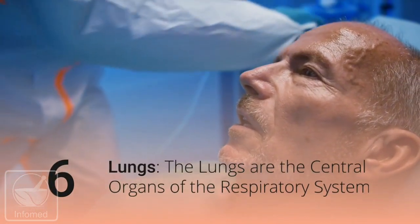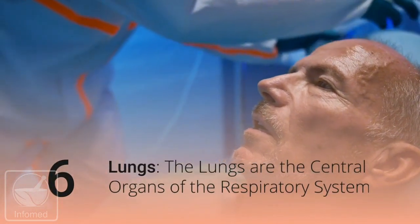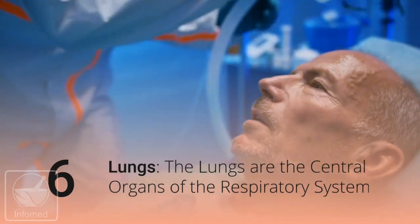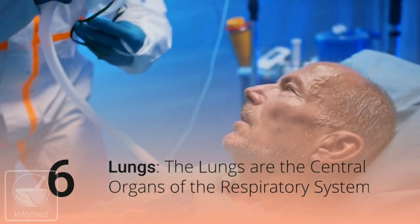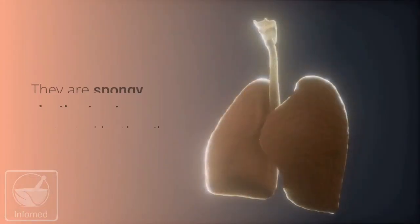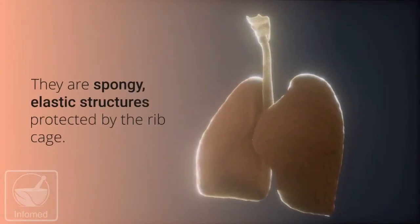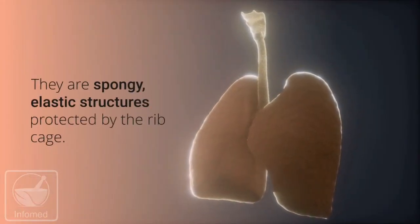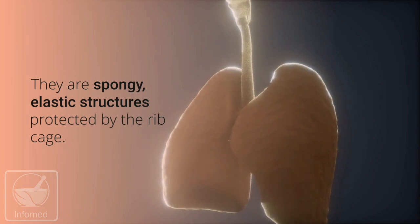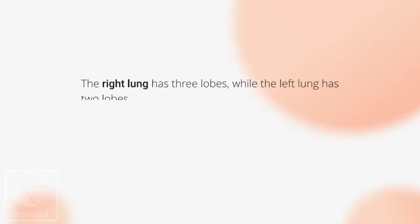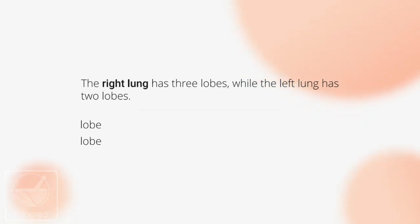The lungs are the central organs of the respiratory system. They are spongy, elastic structures protected by the rib cage. The right lung has three lobes, while the left lung has two lobes.